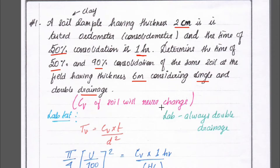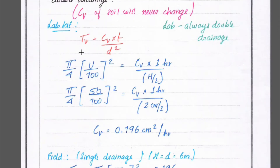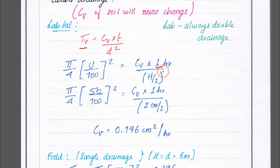We know that the coefficient of consolidation CV of the soil will never change, and for laboratory tests, we always use double drainage. We know the formula: TV = CV × t / D², where D = H/2 for double drainage.